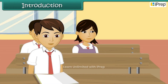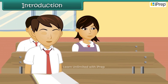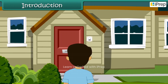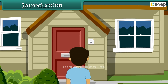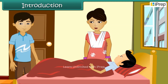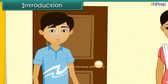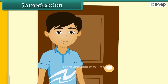Ram was absent from school for the past three days. His friend Rahul went to his home looking for him. Ram's mother informed him that he is suffering from malaria and will not attend school for a few more days. Rahul was worried for his sick friend and also wanted to learn how his friend caught malaria.